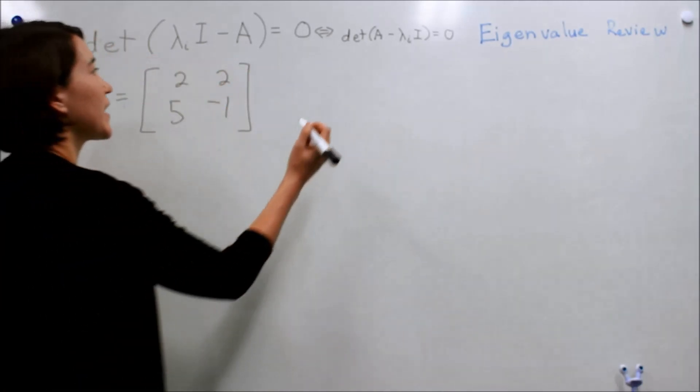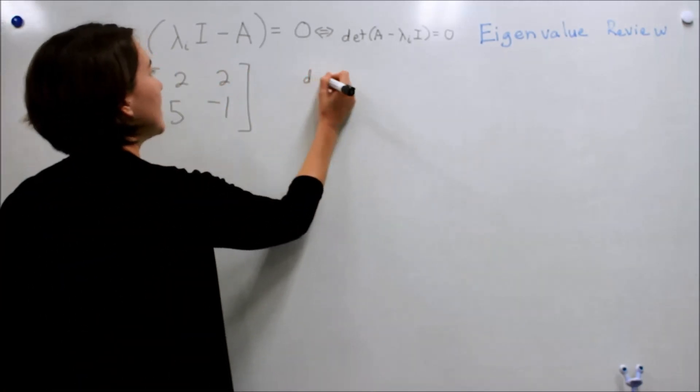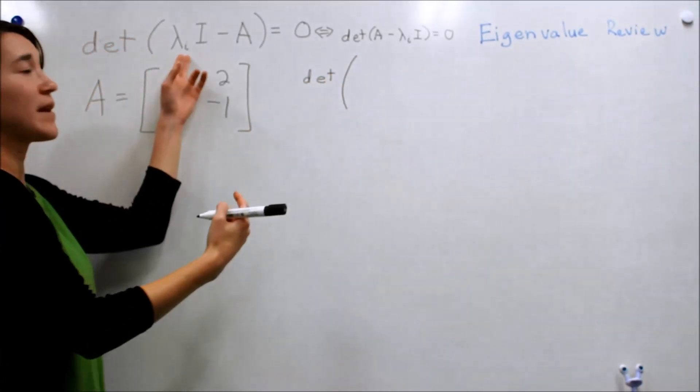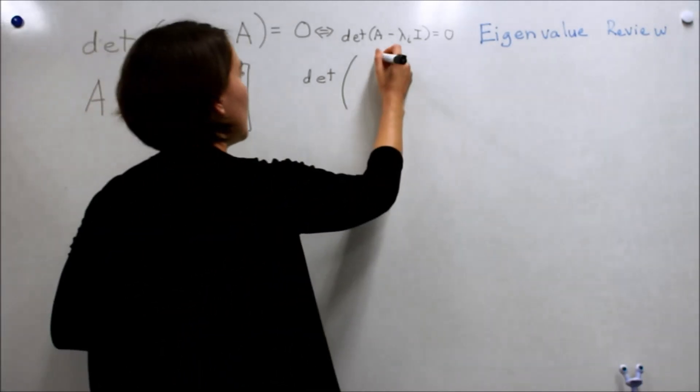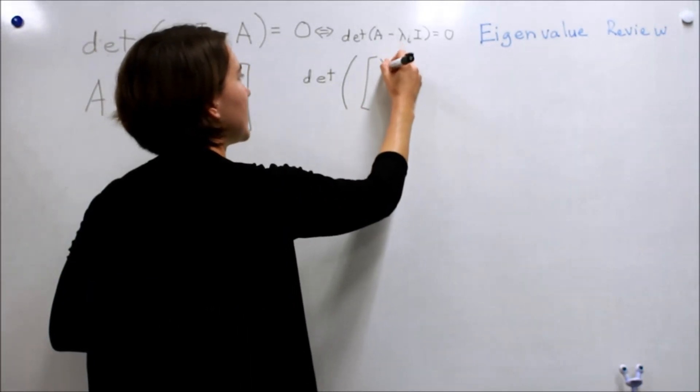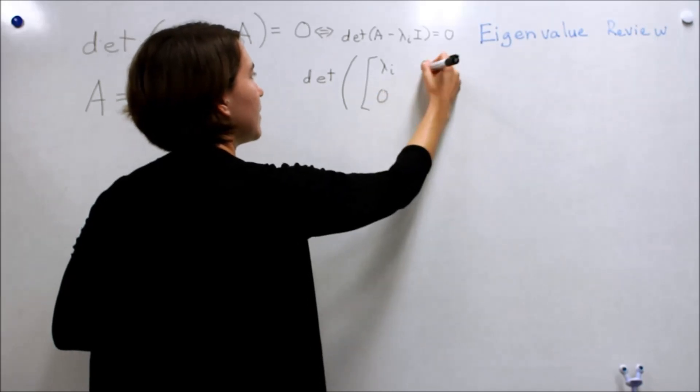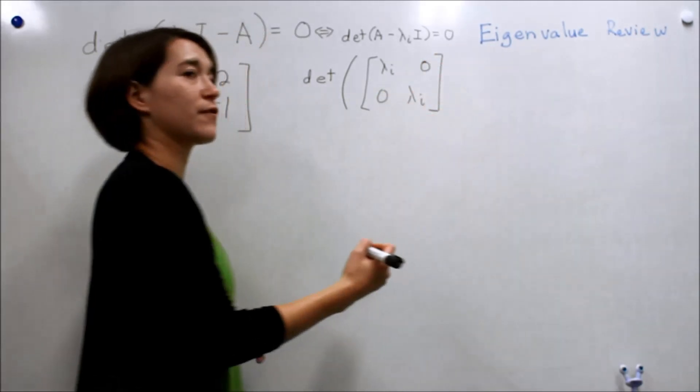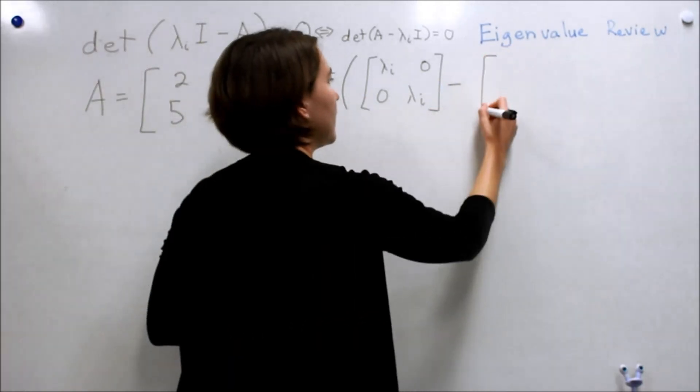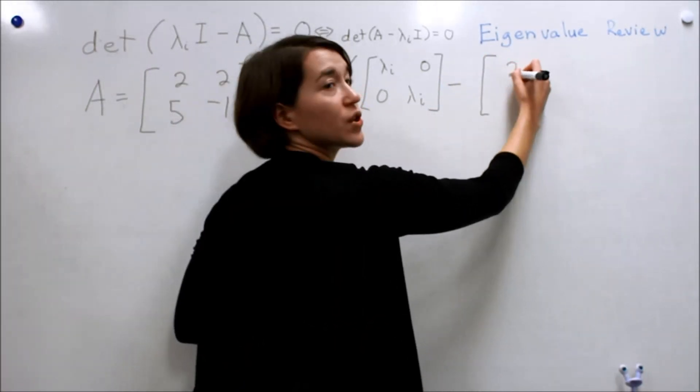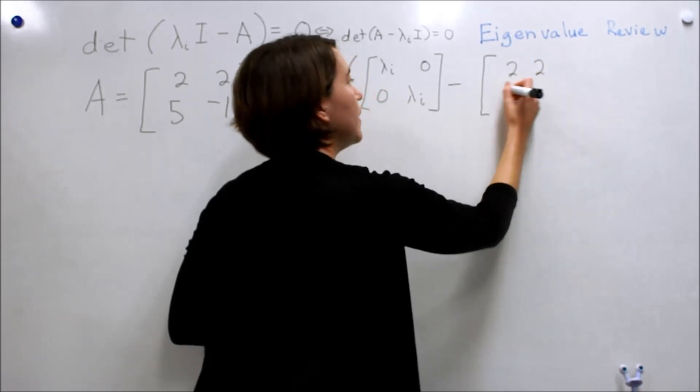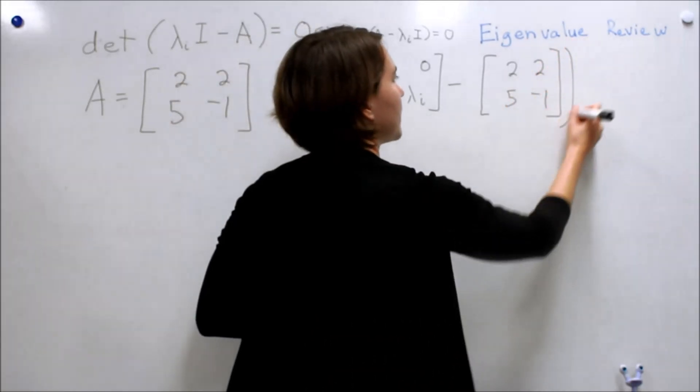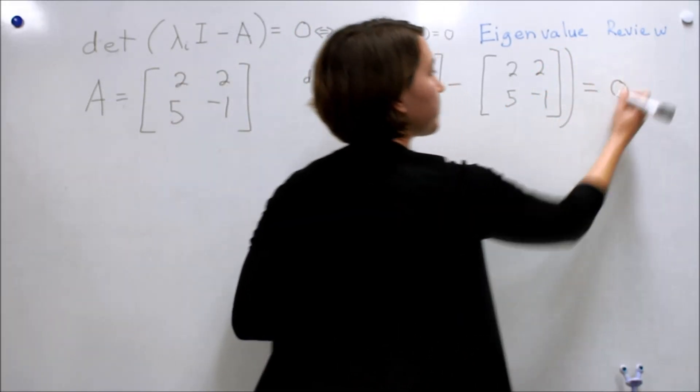We plug it into our formula. So we take the determinant. Now we're going to do lambda times the identity. So we'll have lambda here, 0, 0, lambda here. That's the first part. We'll subtract A. My matrix here is 2, 2, 5, negative 1, minus all, equal to zero.